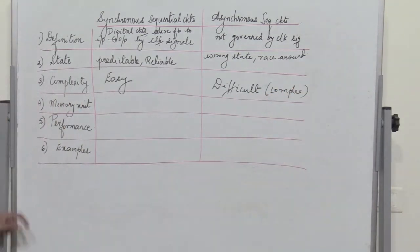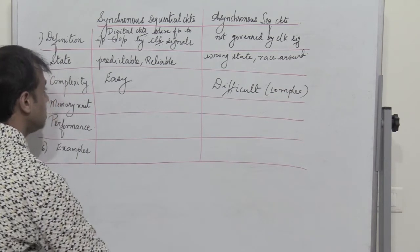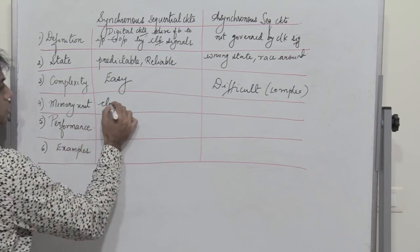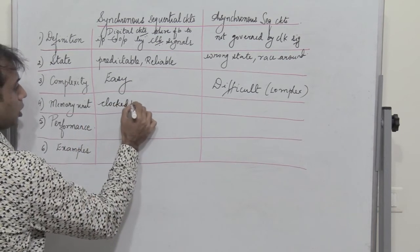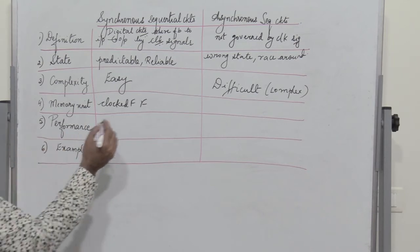Now talking about the memory unit. The memory unit for a synchronous sequential circuit is a clocked flip-flop, which acts as a memory element. Whereas for asynchronous sequential circuits, an unclocked flip-flop or a time delay is used as a memory element.